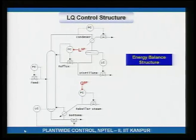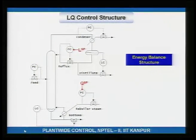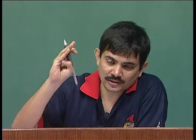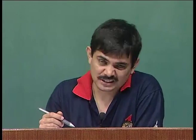Now let us look at some basic control structure types for a simple distillation column. You need to control at least three things: the pressure and the two liquid levels. The set of valves used for this defines certain basic control structure types.